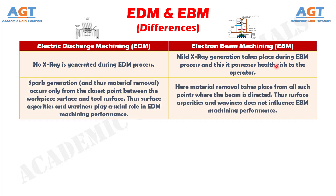Number 7: Spark generation, and thus material removal, occurs only from the closest point between the workpiece surface and tool surface. Thus surface asperities and waviness play a crucial role in Electric Discharge Machining performance, whereas in Electron Beam Machining, material removal takes place from all such points where the beam is directed, and thus surface asperities and waviness do not influence Electron Beam Machining performance.